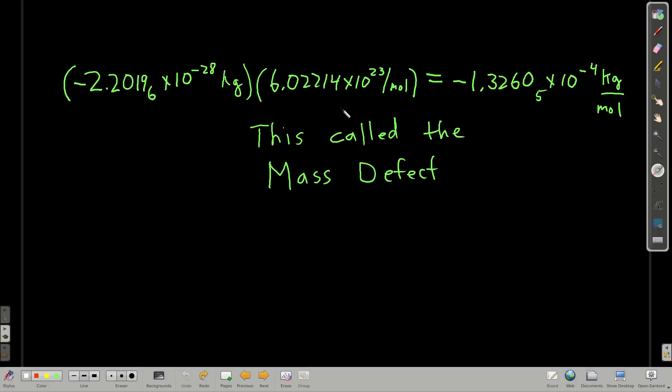But if we multiply that by Avogadro's number, all of a sudden, this is something that we can weigh, we can measure, right? Negative 1.3261 times 10 to the minus 4th kilograms per mole. This number here, this is called the mass defect, the difference between the sum of the masses of the protons and neutrons and the actual mass of the nucleus.